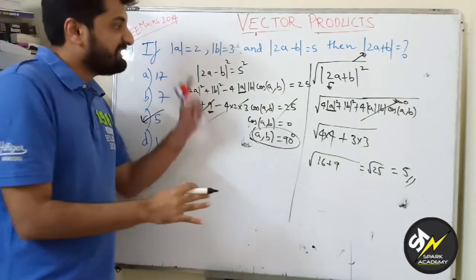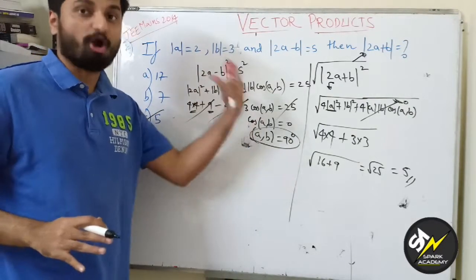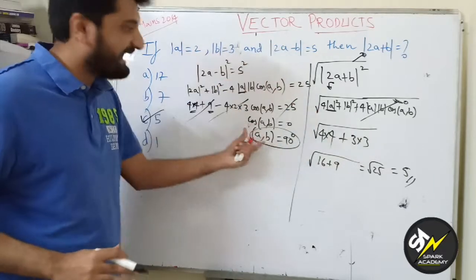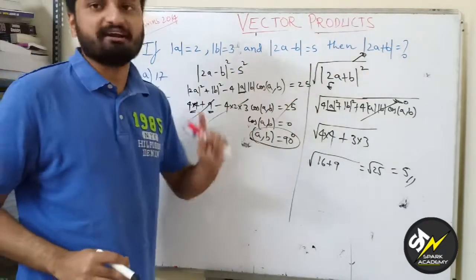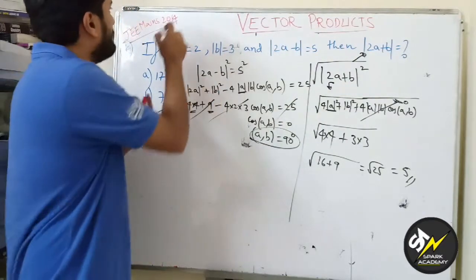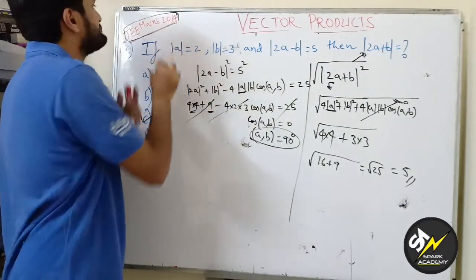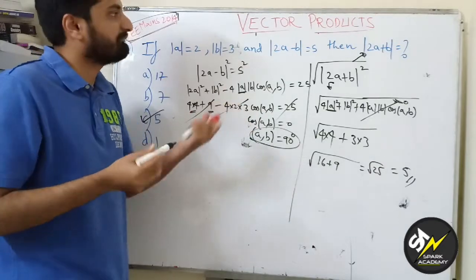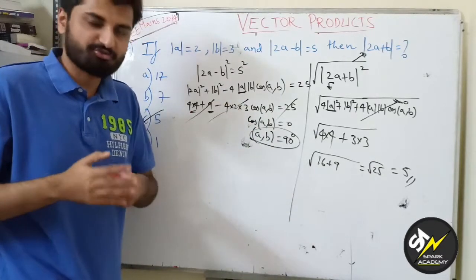So here we saw that by using the basic concepts of dot product we could find out the angle, and that angle I could use to find out another relation. This is how a question in JEE Mains 2014 can be solved using the basic concepts of vector dot products. Thank you so much.